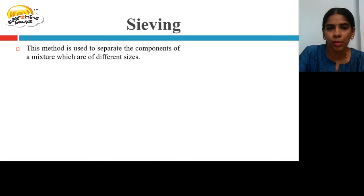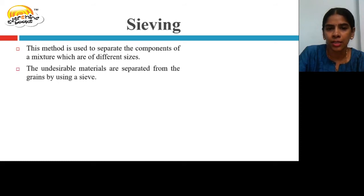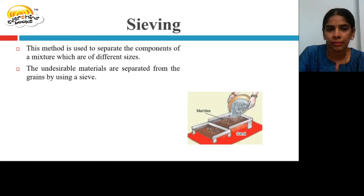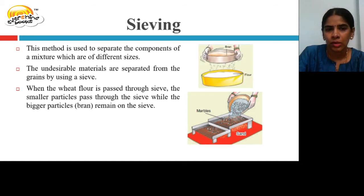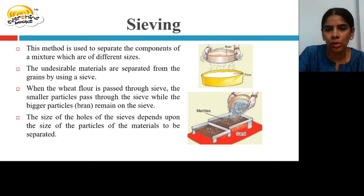Sieving is used to separate the components of a mixture which are of different sizes. Undesirable materials are separated from grains using a sieve. When wheat flour is passed through the sieve, the small particles pass through while the larger particles known as bran remain on the sieve. The size of the holes of the sieve depends on the size of the particles to be separated.